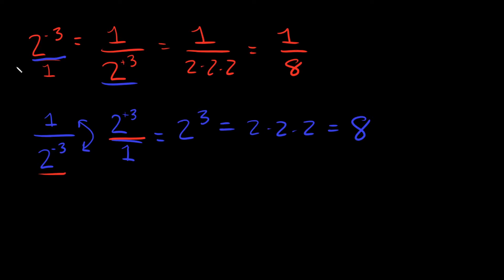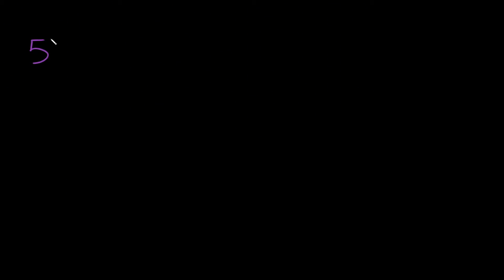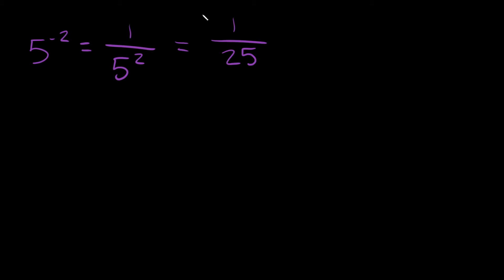So these are our two main cases — Case A and Case B. To recap Case A: if we have 5 to the negative 2, that's the same as 1 over 5 squared, which is 1 over 5 times 5, which is 1/25. So your answer is positive 1/25.